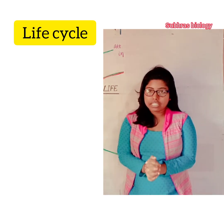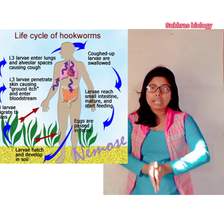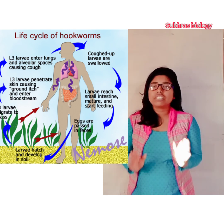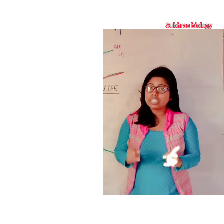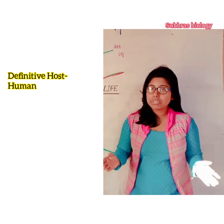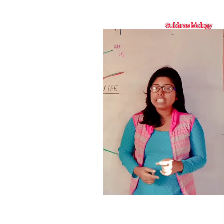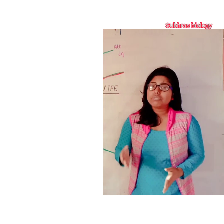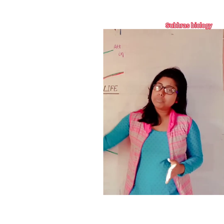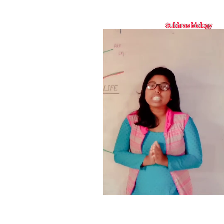Now we will study the life cycle of Ancylostoma duodenale. Like all other life cycles, it is also very easy because it has only one host — one definitive host, and that is a human. There is no intermediate host. The question arises: if there is only one host, how can it be transmitted from one person to another? It is through fecal matter.